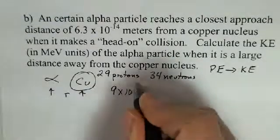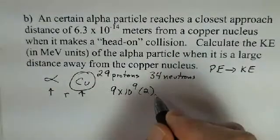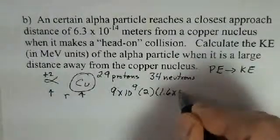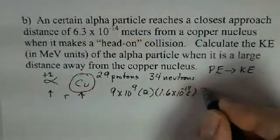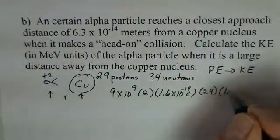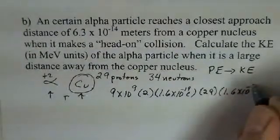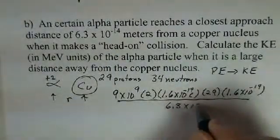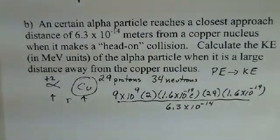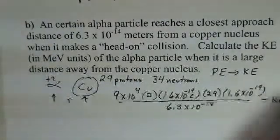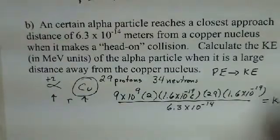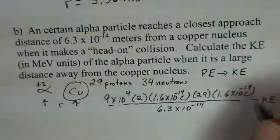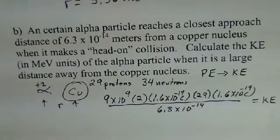Let's go ahead and continue the calculation. Potential energy equals 9×10⁹ times the charge of the alpha particle — 2 protons, 1.6×10⁻¹⁹ coulombs — times the copper charge, 29 protons, times 1.6×10⁻¹⁹ coulombs, divided by 6.3×10⁻¹⁴ meters. On the left side we have potential energy, and on the right side we'll get kinetic energy. The units here are joules, since everything is in standard metric units with coulombs for our charges.